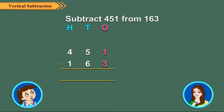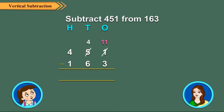Subtract the 1's. Since there are not enough 1's, you will have to regroup. 5 10's and 1 one is equal to 4 10's and 11 1's. Now, 11 1's minus 3 1's is equal to 8 1's.